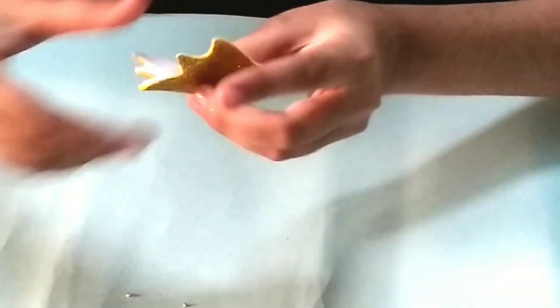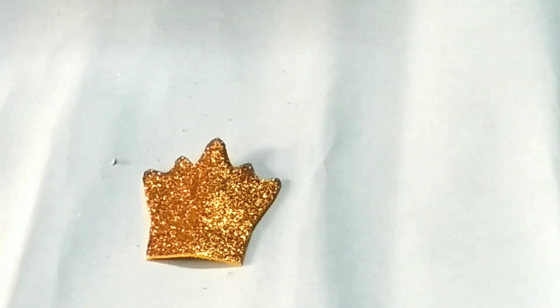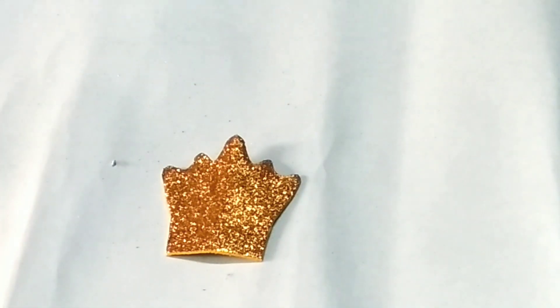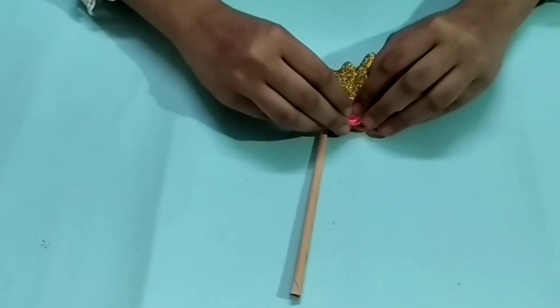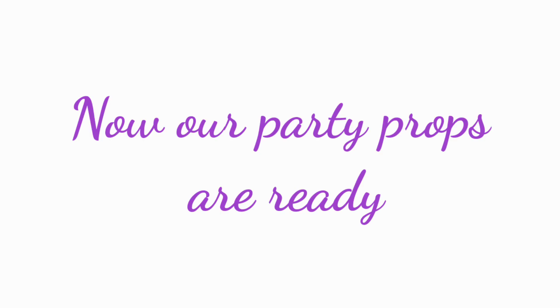Next is a crown. Take the cutout and cut it accordingly. Now it's time to paste a glitter sheet stripe and paste a rose. Now our party props are ready. Go and click wonderful photos from it.